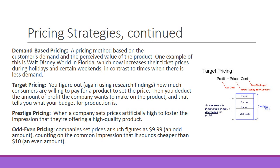Then there's odd and even pricing — companies set prices at figures such as $9.99, counting on the common impression that it sounds cheaper than $10. We all know it's a penny, and a penny isn't even worth the cost to make one. But we have this little thing in our brain that makes us think we're saving money, even though we know it's just a penny.